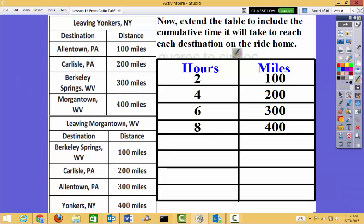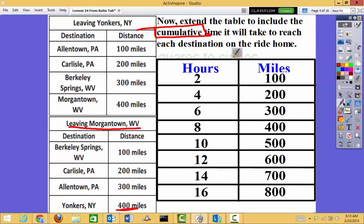Now we're going to extend the table to include the cumulative time it will take each destination on the ride home. So now, it's asking us, how about the ride home? So we're starting at Morgantown, and we're heading back home. Well, let's look. Cumulative means we're going to add on to it. So we're not going to start a new number table. We're going to add on to this part right here. So it's going to take us 2 hours again to drive how far? 100 miles. But this time, I'm going to add that 100 onto my 400 to get 500. I'm going to keep adding by 2 for my hours and add 100 miles.